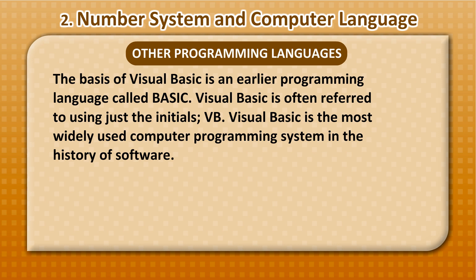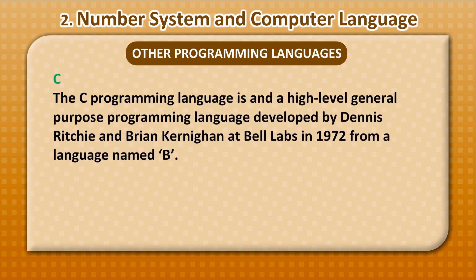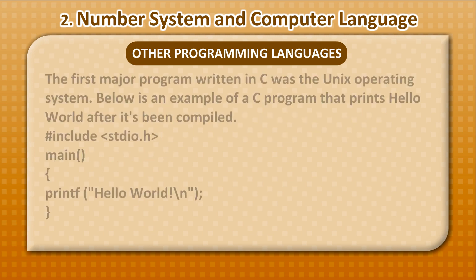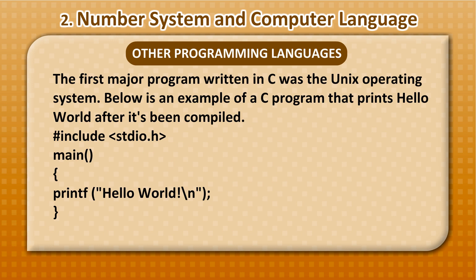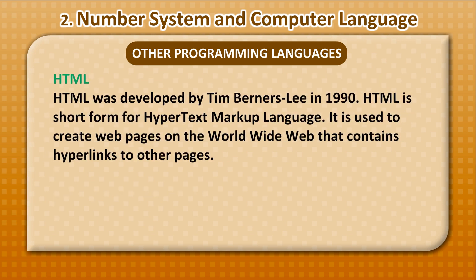C: The C programming language is a high-level general-purpose programming language developed by Dennis Ritchie and Brian Kernighan at Bell Labs in 1972 from a language named B. The first major program written in C was the Unix operating system. Below is an example of a C program that prints Hello World after it's been compiled.